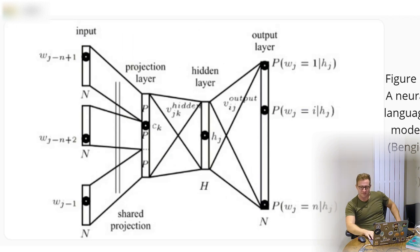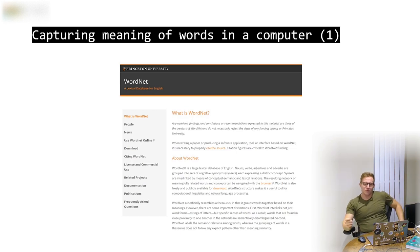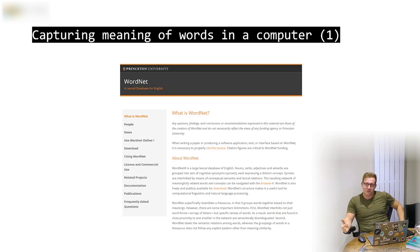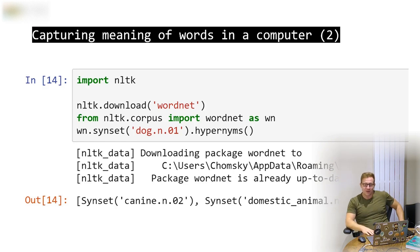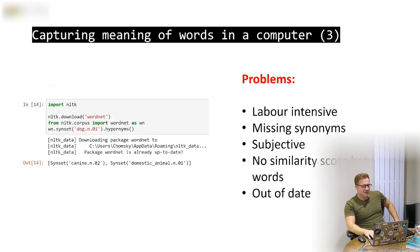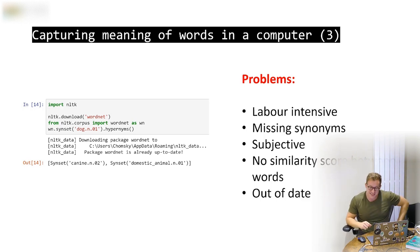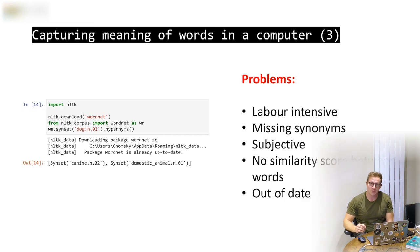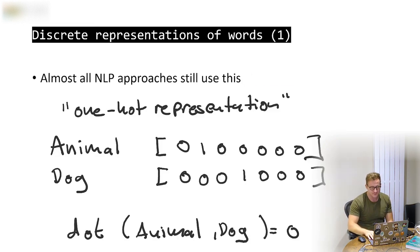Capturing the meaning of words is quite difficult. I was involved in a trademark registration company about 15 years ago, trying to determine if two words were confusable or conceptually similar. We used something called WordNet, a lexical database available from Python. You can look at the hyponyms for 'dog' and programmatically see that a dog is a canine and domestic animal. Unfortunately, WordNet has limitations: it's labor-intensive, missing many synonyms, subjective, out of date, and most importantly, there's no similarity score between words — it's an atomic system.